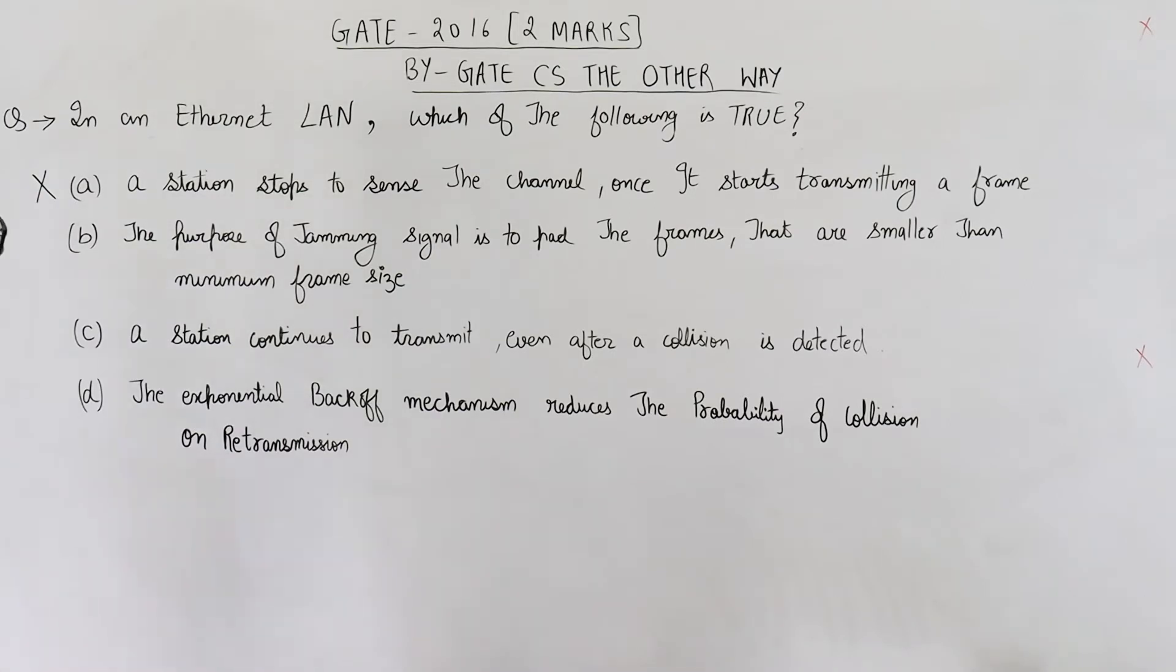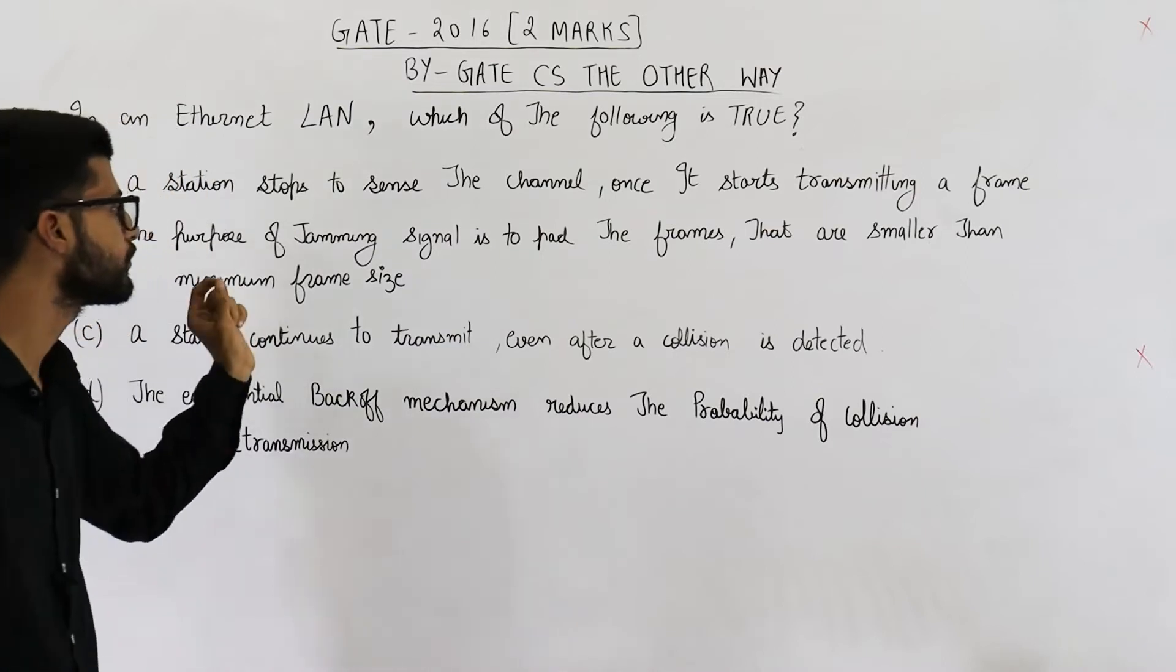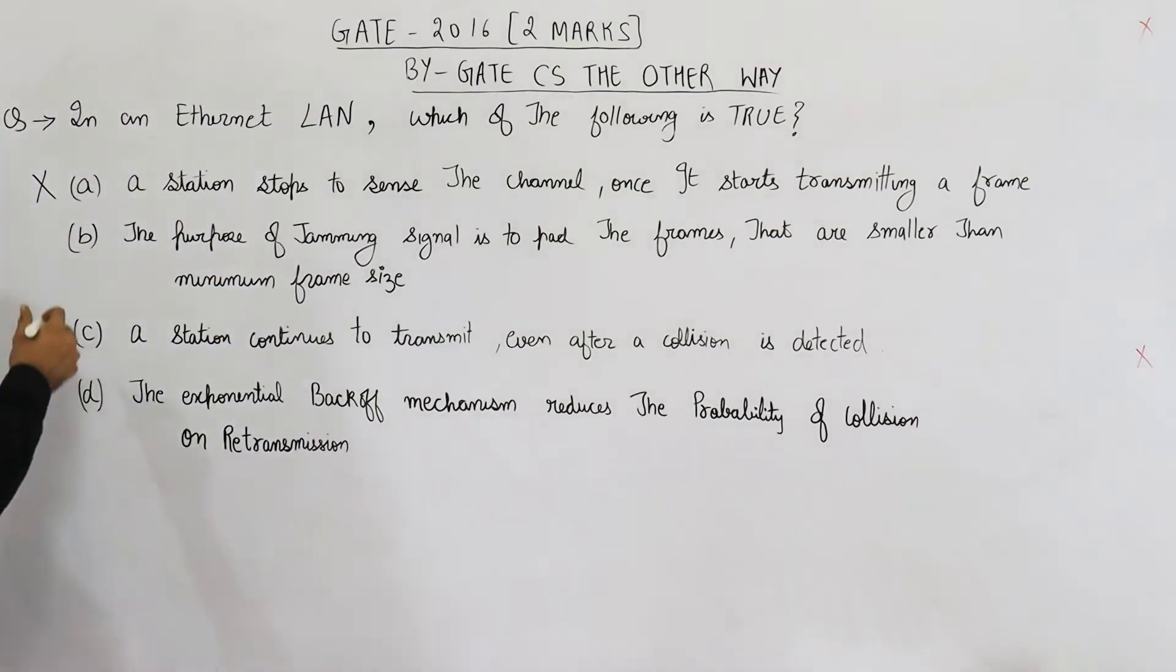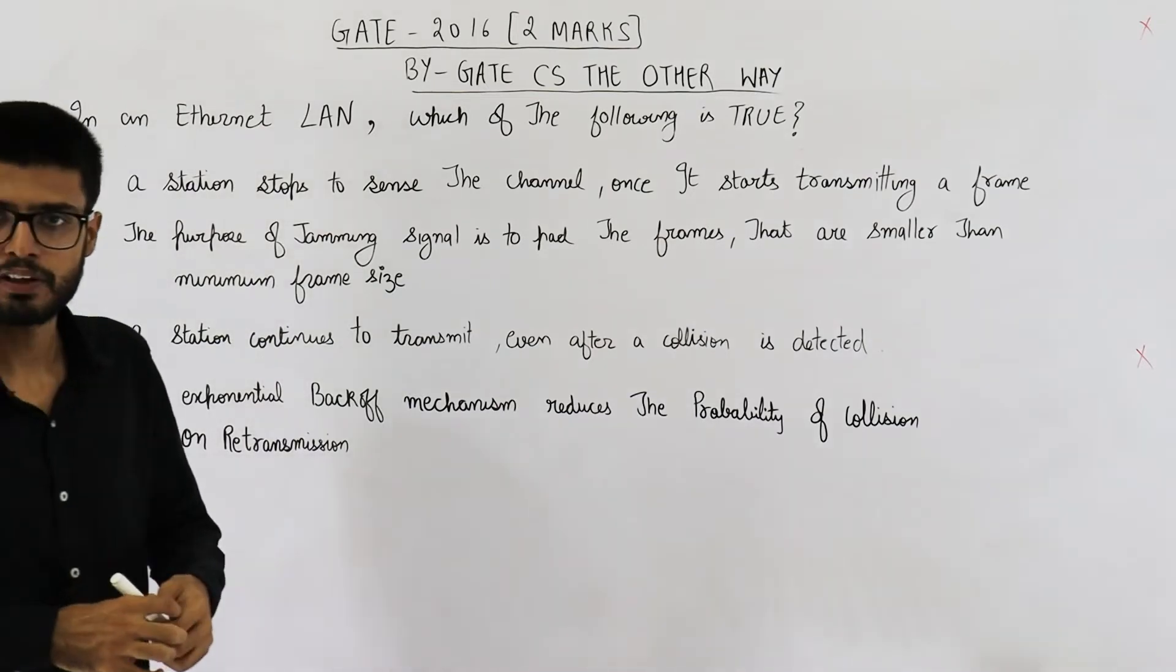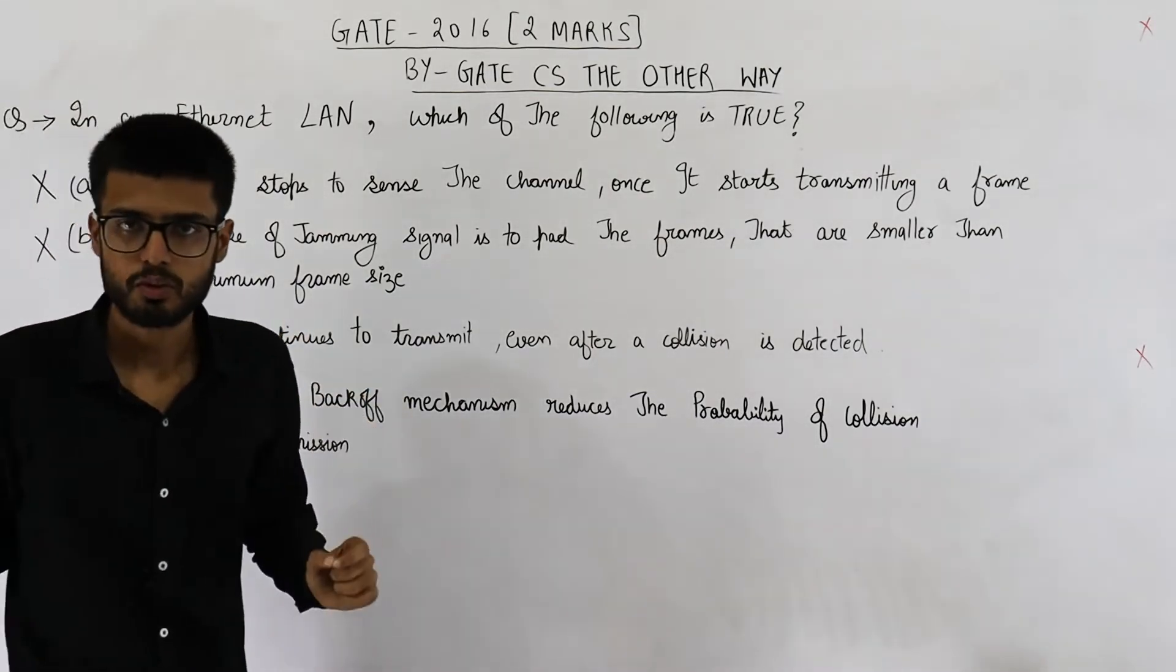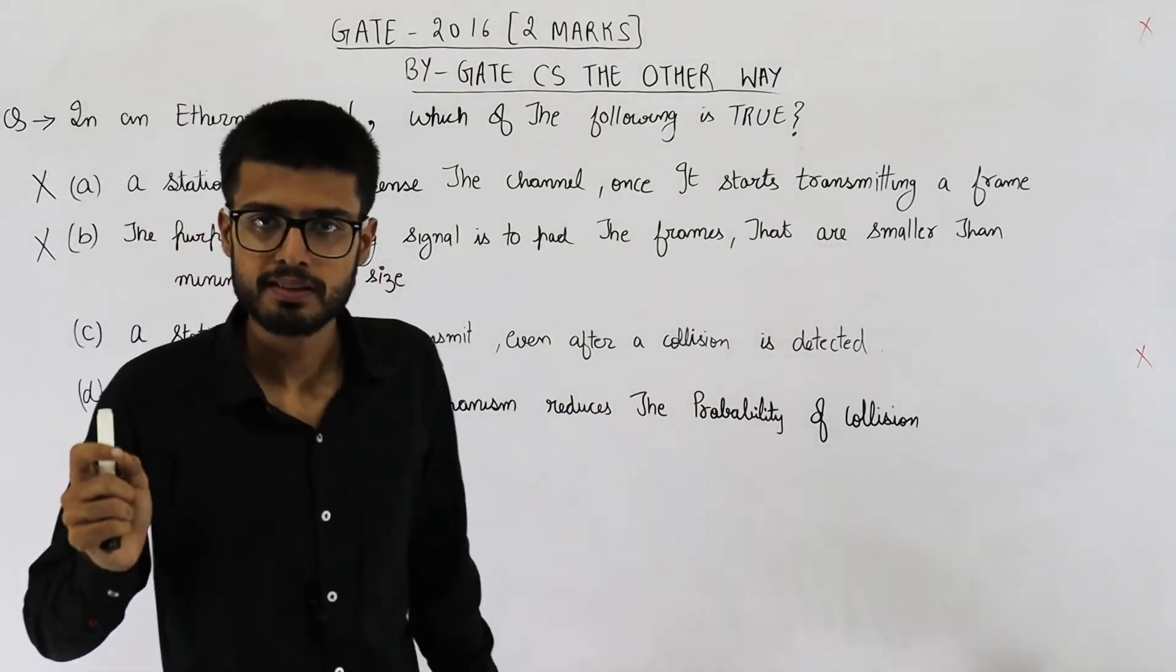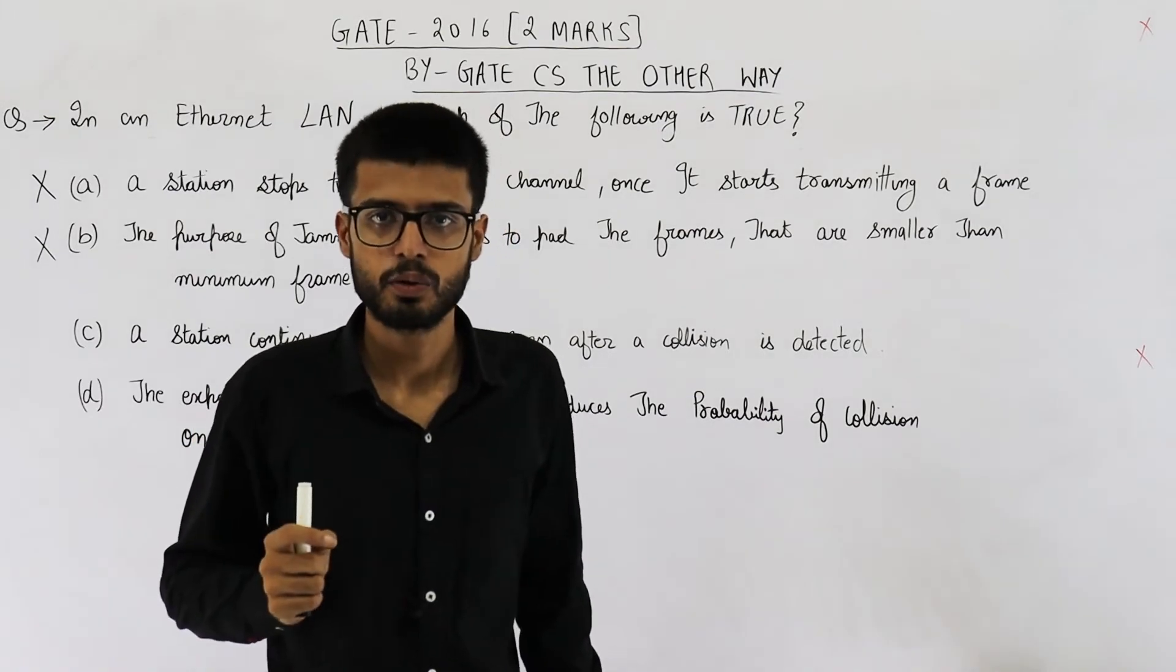Option B says the purpose of jamming signal is to pad the frames that are smaller than minimum frame size. This one is also wrong. We have padding bits for increasing the frame size of those frames whose size is very small. So jamming signal is for some other purpose. Actually when a station sees that there is a collision.